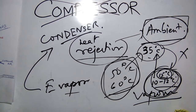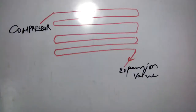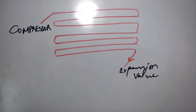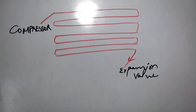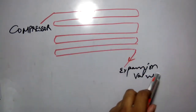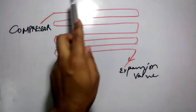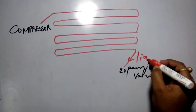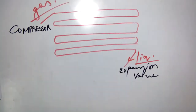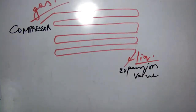Now we will understand the heat rejection process happening in the condenser. The refrigerant from the compressor enters the condenser as vapor (gaseous state) at high temperature and high pressure. After the heat rejection process in the condenser, it will enter the expansion valve as liquid. So it enters as gas and leaves as liquid.